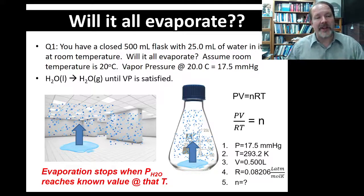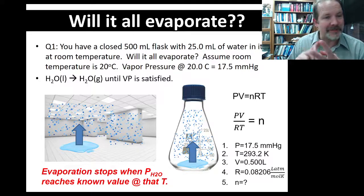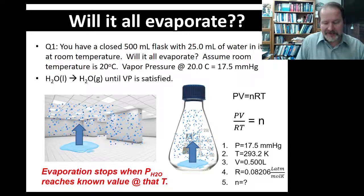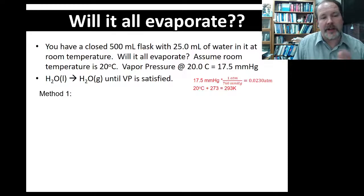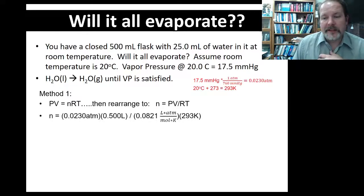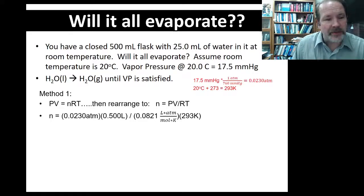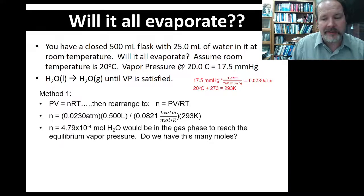The ideal gas law gives you volume, temperature, and pressure, so we have most of what we need. Let's convert millimeters of mercury to atmospheres and Celsius to Kelvin — I call this Method 1. I'm going to solve for the number of moles that will evaporate. I put in 0.023 atmospheres — that's the vapor pressure we're trying to hit — and the volume is the half-liter container. With R and temperature, I calculate 4.79 times 10 to the minus 4 moles of water will evaporate.